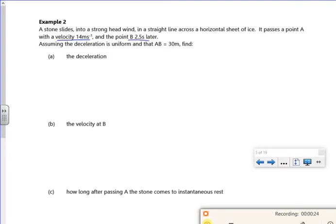So I'm going to say A to be my U value. So I'm writing down U is 14 meters per second. If you imagine what's happening, as it's traveling through the wind, the wind is slowing it down. T is 2.5 seconds and I'm saying, assuming deceleration is uniform and AB is 30 meters, the distance is 30 meters.